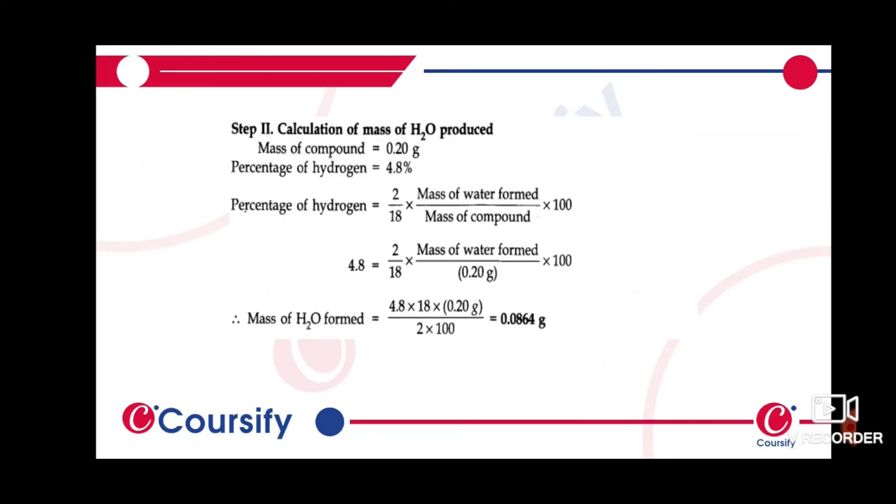We write the calculation of the mass of water produced. Here we have written the mass of the compound which is 0.2 gram. Then the percentage of hydrogen is equal to 4.8%.